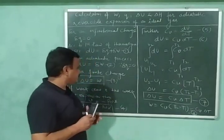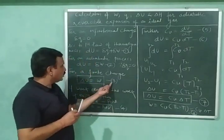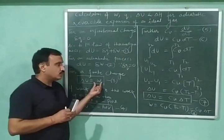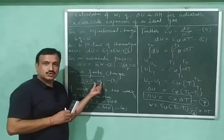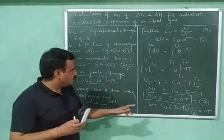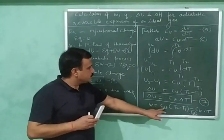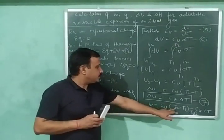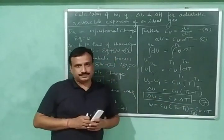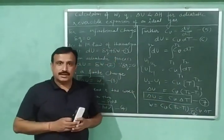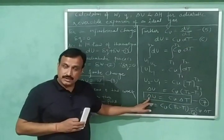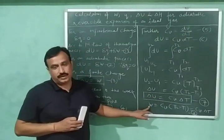From equation number three, the change in internal energy is also equal to the work done. So the work done will have the same expression: W equals Cv times (T2 minus T1), or Cv times delta T. These are the relationships for the change in internal energy and for the work done.